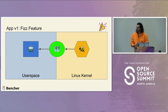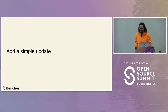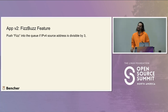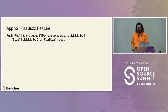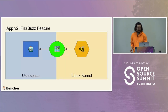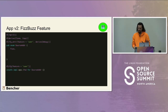Let's add a simple update. I think you can see where this is going — FizzBuzz! So: push Fizz if the source address is divisible by three, Buzz if divisible by five, and FizzBuzz if both. Otherwise, just send XDP pass. We update the shared data enum to add Buzz and FizzBuzz.